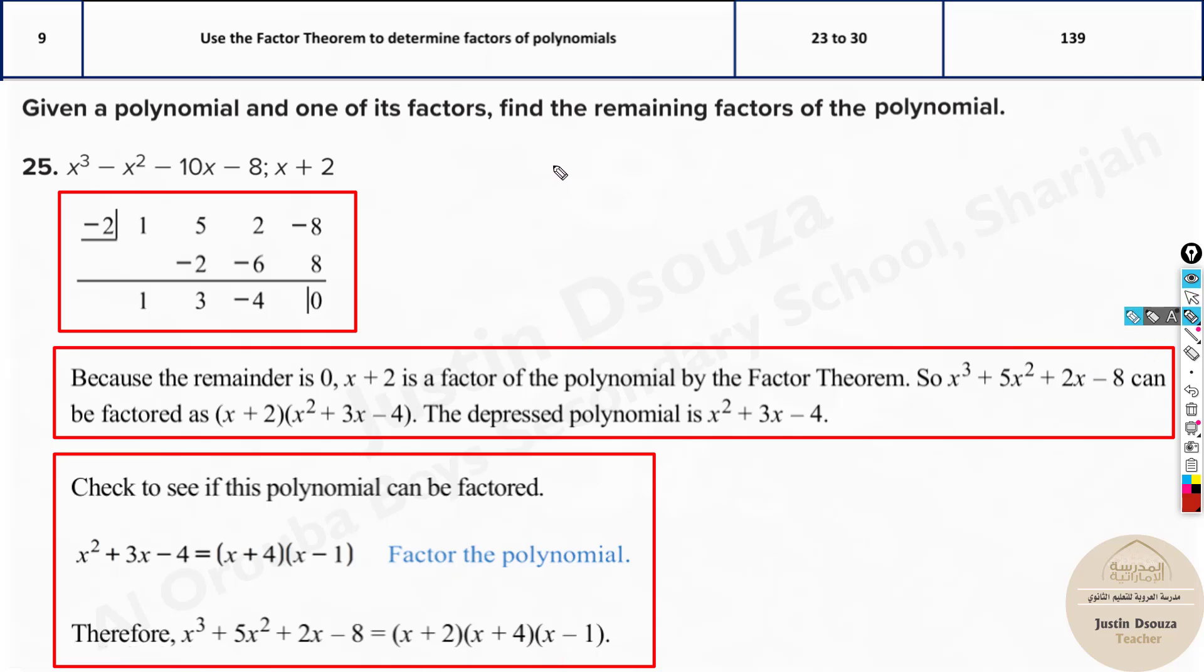But in your calculator, when you solve, you will get x = -2, x = -4, x = +1. This is not how we write. We have to take this inside. It will be (x + 2), one factor. (x + 4), other factor. And (x - 1) as the other factor. That's how we get these. So in your calculator, you get equal to the opposite sign. So be careful with that.